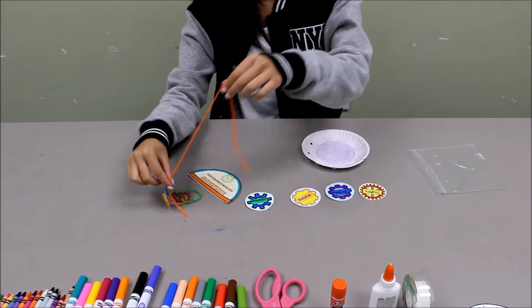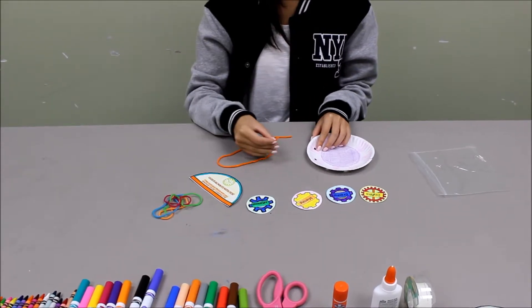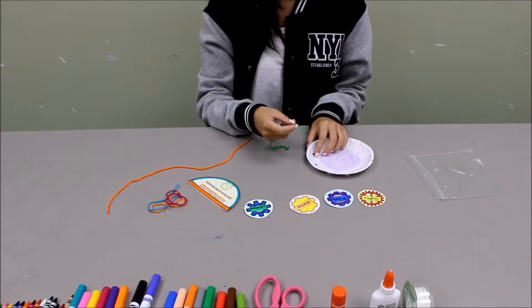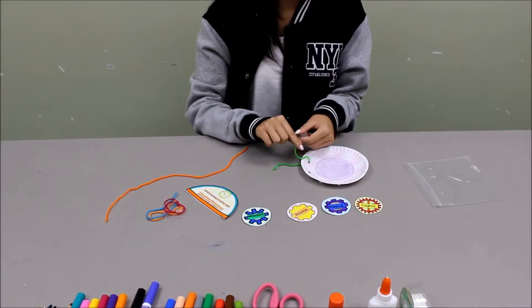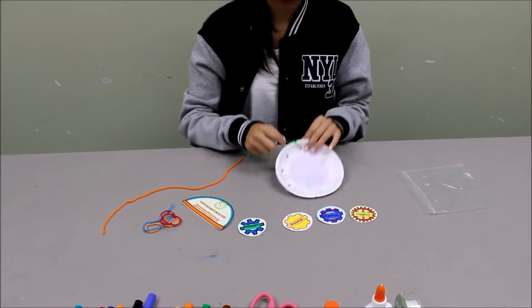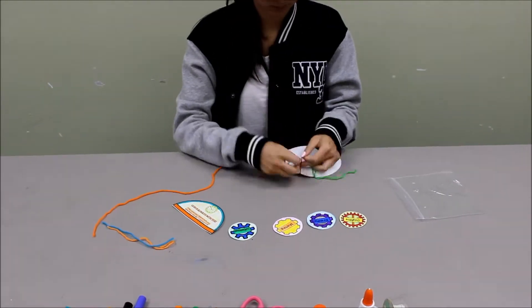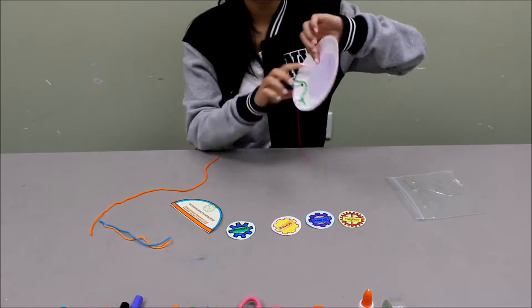And when they're done with that, they're going to take not the long string but one of the short strings and start by tying them into a hole. They should make the knot closer to the plate so they have string that falls down, and they should do that for all four holes.